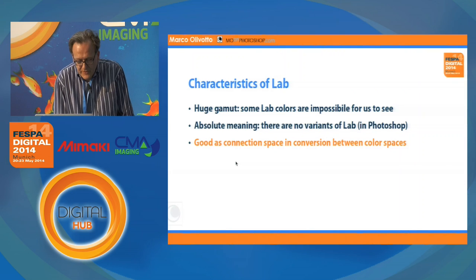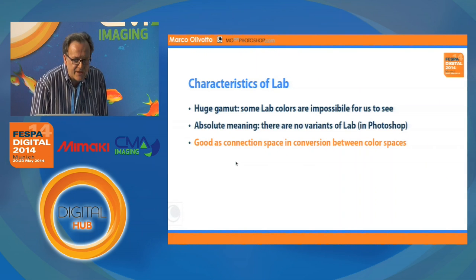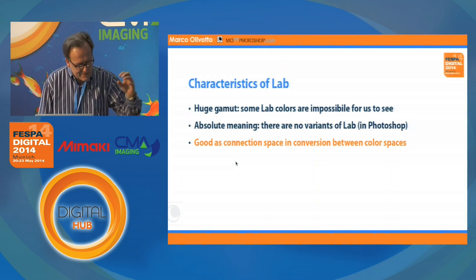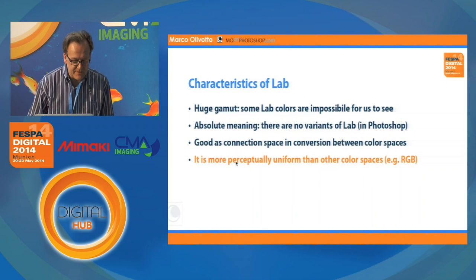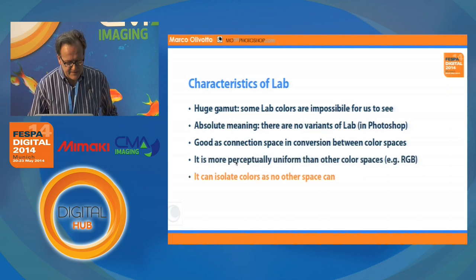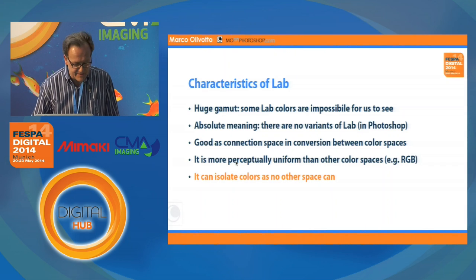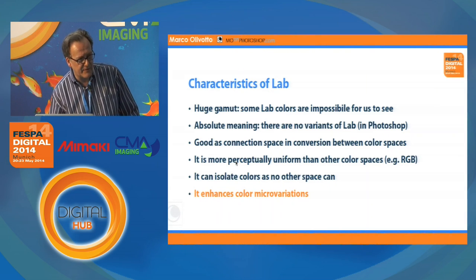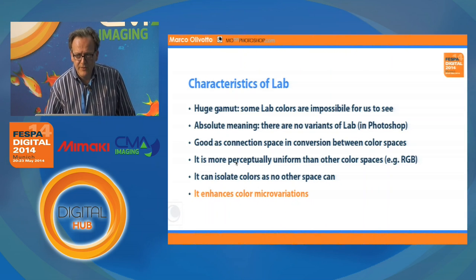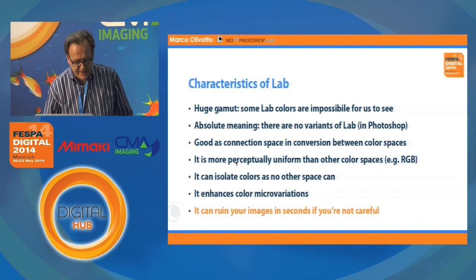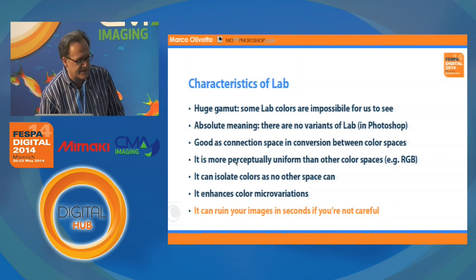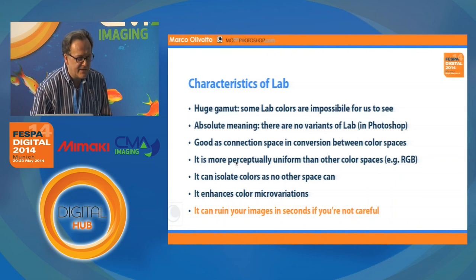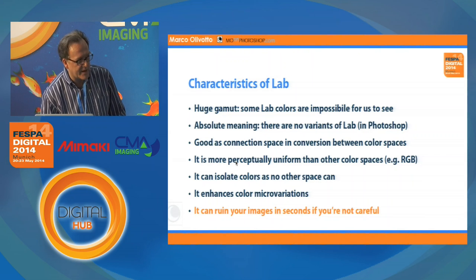LAB is a connection space in conversion between color spaces. Whenever you go to CMYK, you're actually diving into LAB and coming out of LAB — RGB calls for LAB to compute the colors and then converts to CMYK. Finally, it is more perceptually uniform than any other color space, and closer to what we see. It can isolate colors as no other space can, and it has the incredible power of enhancing color micro-variations. But it is also like an elephant in a glass store — it can ruin your images in seconds, because it is so powerful. With power comes responsibility, so you must be very aware of what you're doing with LAB. Otherwise, you can really crash your images in the blink of an eye.